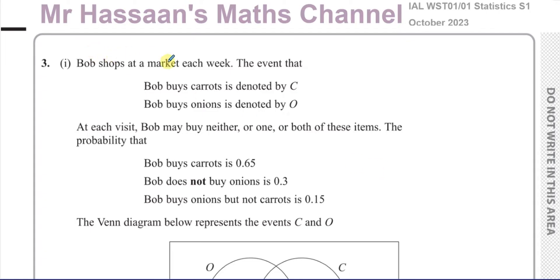It says Bob shops at a market each week. The event that Bob buys carrots is denoted by C and Bob buys onions is denoted by O. At each visit, Bob may buy neither, one, or both of these items — carrots, onions, or both, or neither. The probability that Bob buys carrots is 0.65. The probability that Bob does not buy onions is 0.3. And the probability that Bob buys onions but not carrots is 0.15.